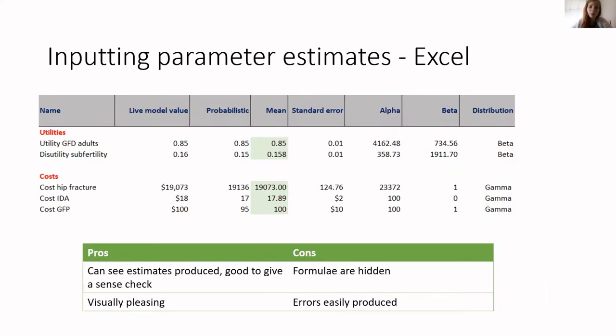I just thought I would reflect a little on how I would have built the model in Excel or how I would have coded it in Excel compared to how I did it in R. The first thing is inputting parameter estimates. It's often one of the first things you do. If I had done it in Excel, I would have had a sheet with my model parameters. It looks something like this, where I input the mean and the standard error. And I had columns where I calculated the alpha and the beta, and a probabilistic column where I pulled from the beta distribution. And then a column with the live model value depending on whether the model is set to deterministic or probabilistic.